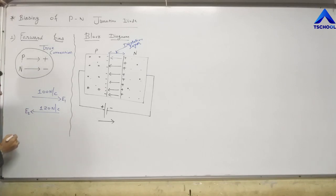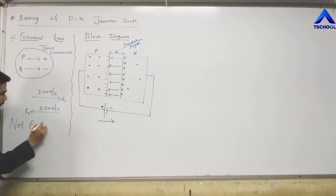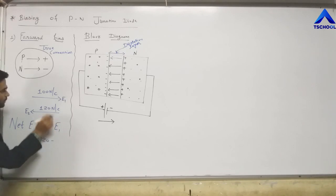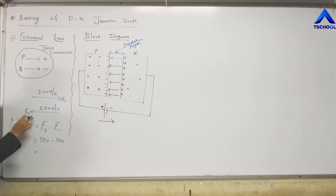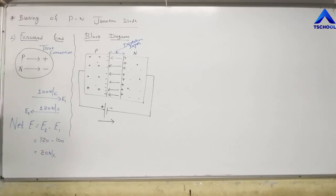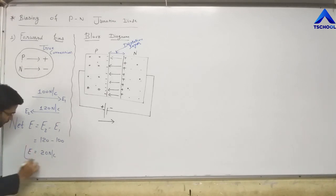So the net electric field E = E2 − E1 = 120 N/C − 100 N/C = 20 N/C. The net electric field is 20 N/C.